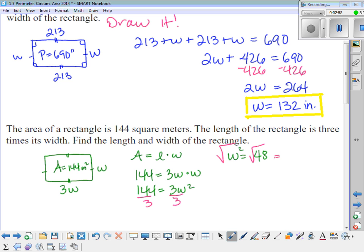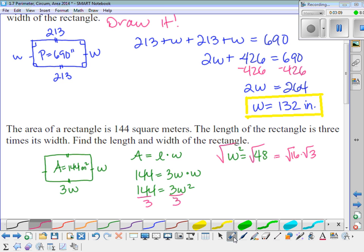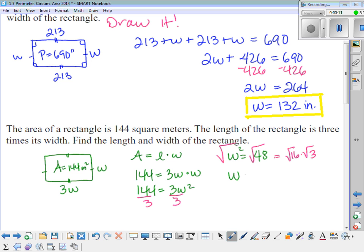And 48 has a perfect square that we'll divide into it. And you want to find the biggest one you can. In this case, 16 times 3 is equal to 48. So that means that my width is 4 root 3 meters. And then the length is equal to 3 times the width. So 3 times 4 root 3. And so that would be 12 root 3 meters.